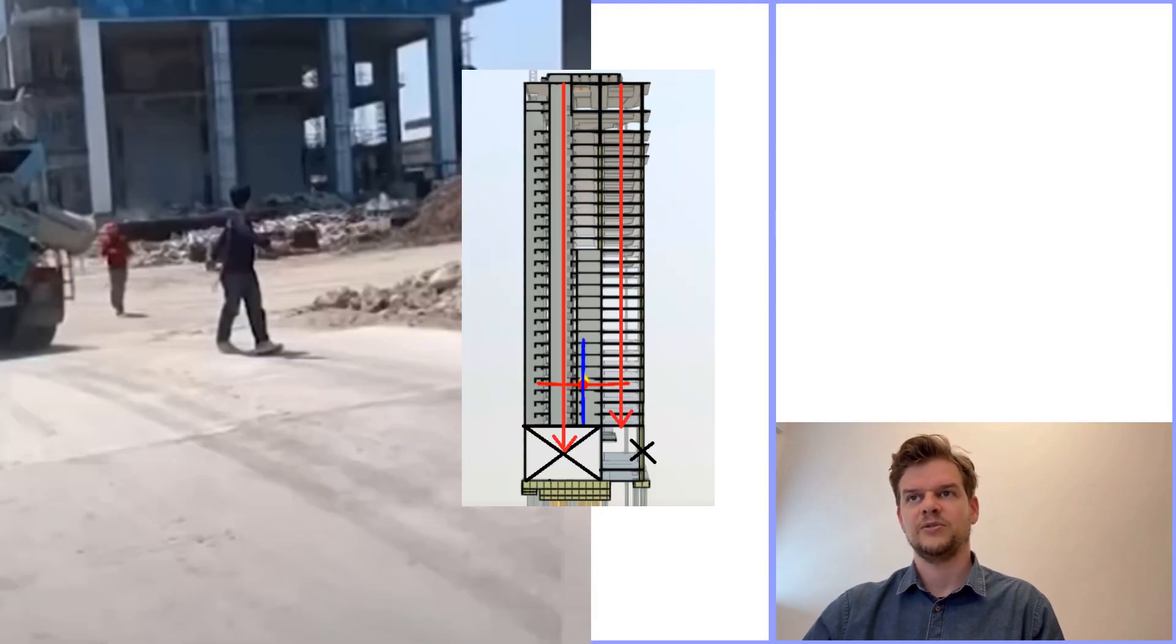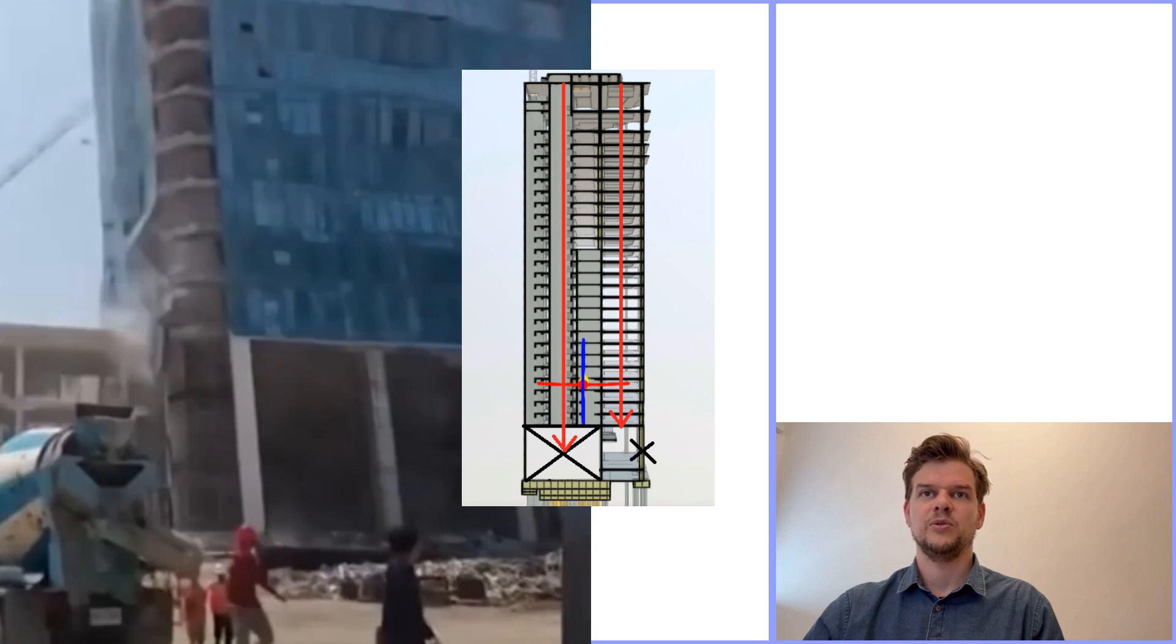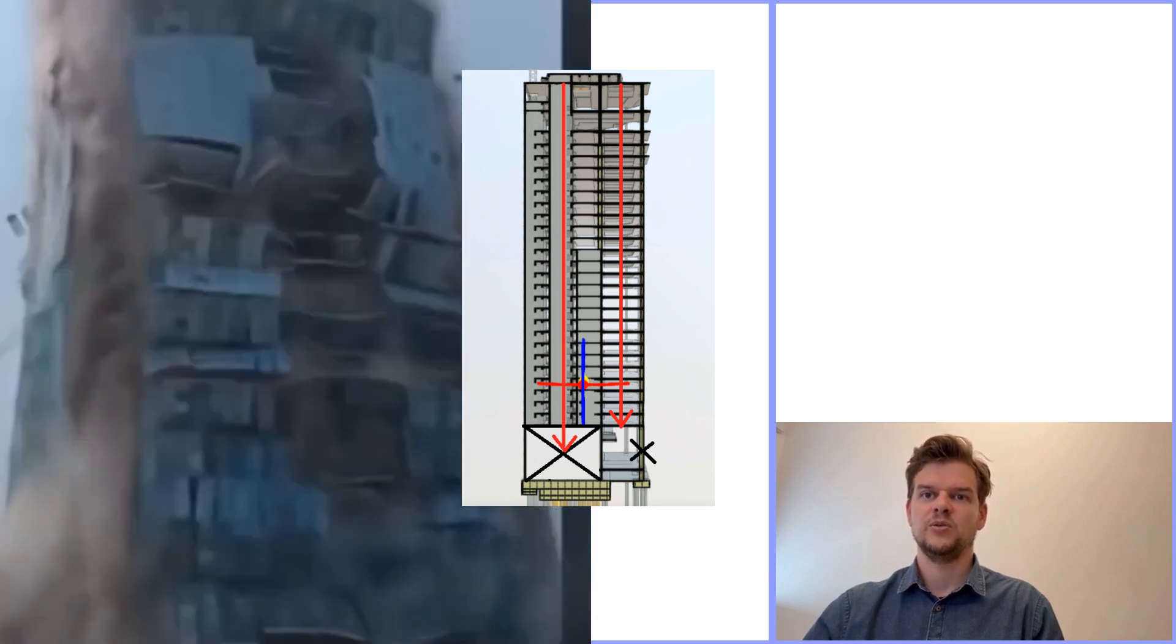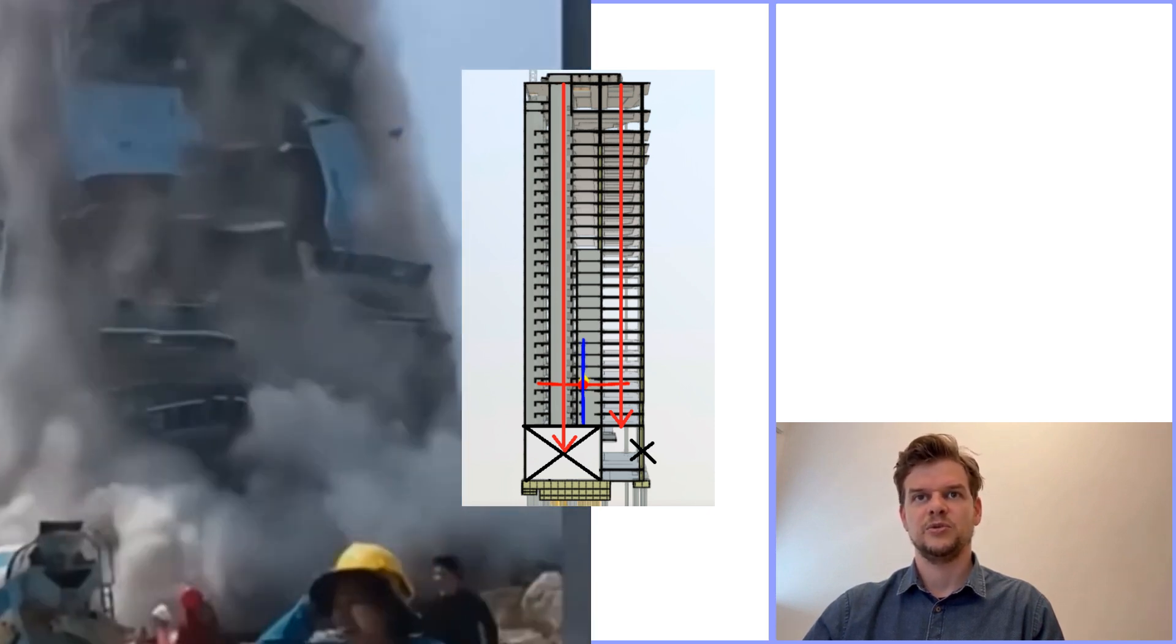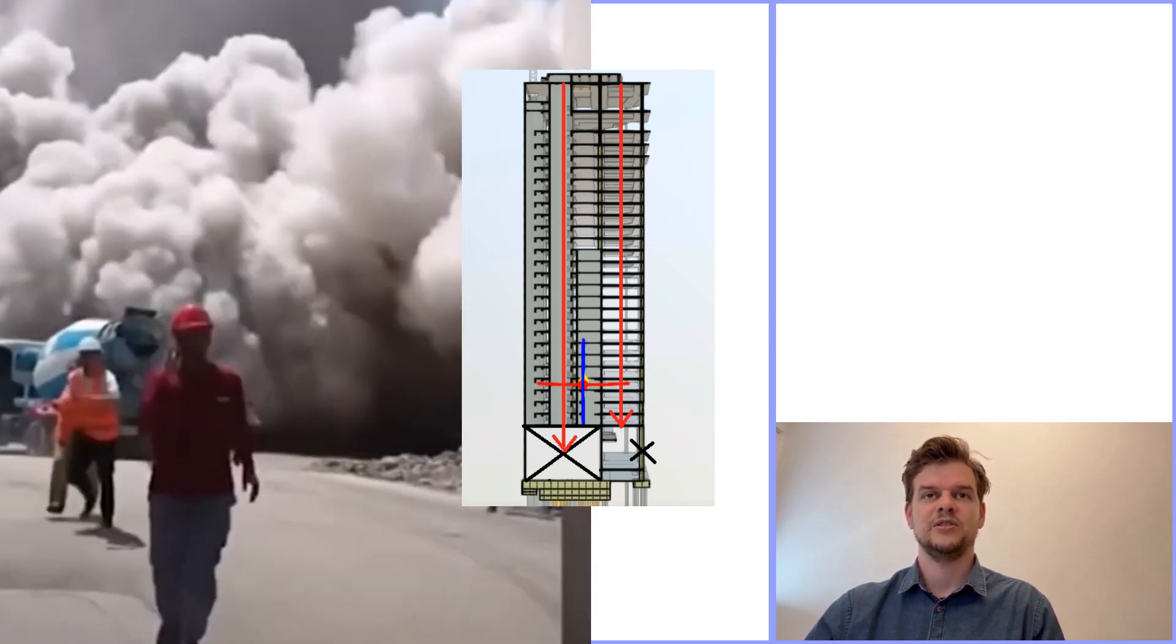So when we see the columns failing in the video, what's really happening? At that point, the columns are trying to deal with torsion because the core most likely failed earlier near the bottom floors. The torsional load that the core can no longer resist gets pushed into the columns, and they're simply not designed to handle that. But the columns fail instantly too.